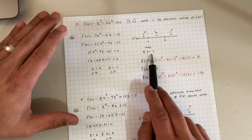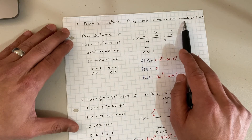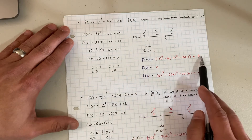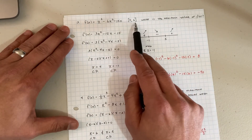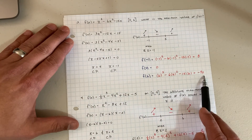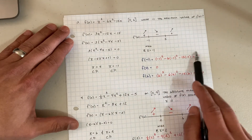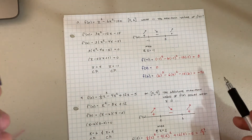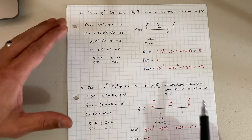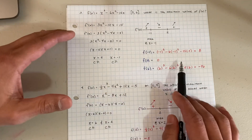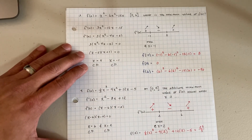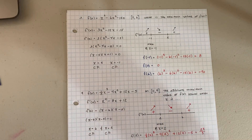There's a max at x equals negative one, but what's the maximum value of f(x)? That's a different story. You find f(-1) = 8, but you must check the endpoints: f(0) = 0 and f(6) = -90. So the maximum value is 8. This is very important — read the question carefully. There's a difference between asking where the max is and what the maximum value is.